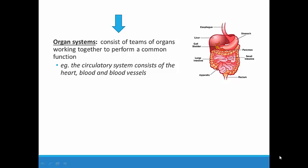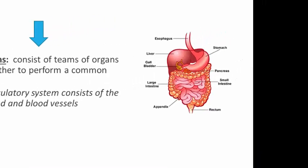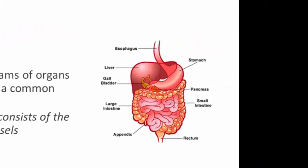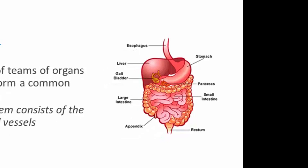Organs do not work in isolation. They typically work with other organs as part of an organ system, where the organs are working together to perform a common function. For example, the heart and the blood vessels work together as part of the circulatory system. The esophagus, stomach, intestines, liver, pancreas, and rectum all work together as part of the digestive system. Each organ has a different role to play in the overall process, but the system as a whole must perform a task, such as pumping blood throughout the body in the case of the circulatory system, or breaking down and absorbing food in the case of the digestive system.